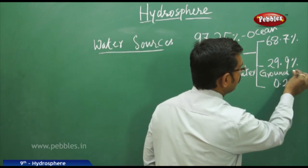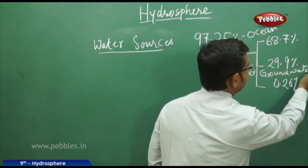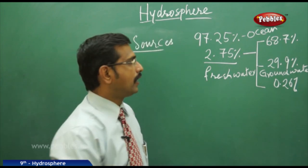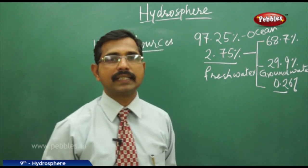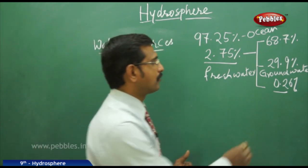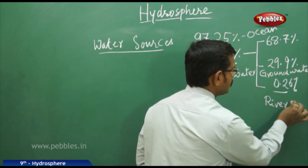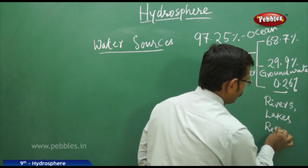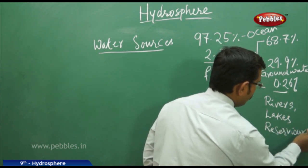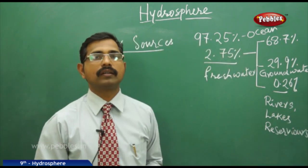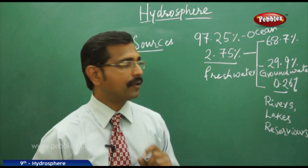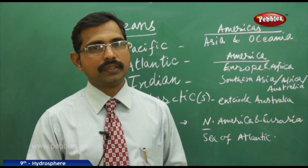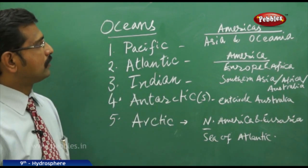Groundwater is fresh drinking water, but it is very expensive to extract. Only 0.26% is easily accessible to us in the form of rivers, reservoirs, and lakes. So the sources available for drinking purposes are very, very minute — just 0.26%. Today we will discuss the oceans.